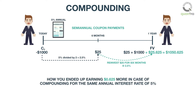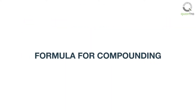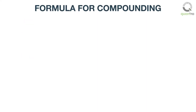Note how you ended up earning $0.625 more in case of compounding, for the same annual interest rate of 5%. An easy way to calculate the effect of compounding, or interest earned on interest payments, is to use this formula.